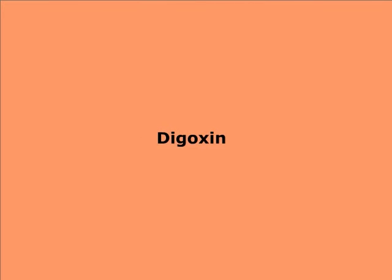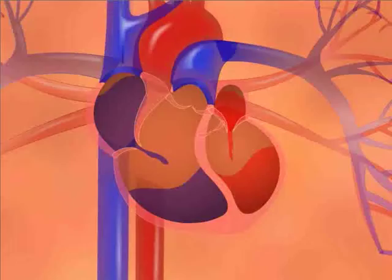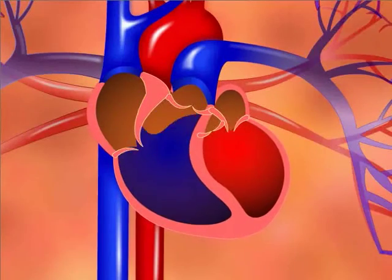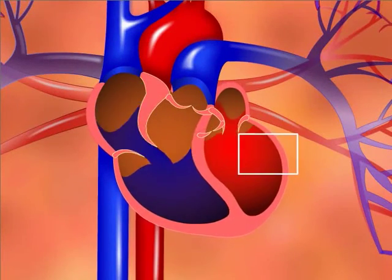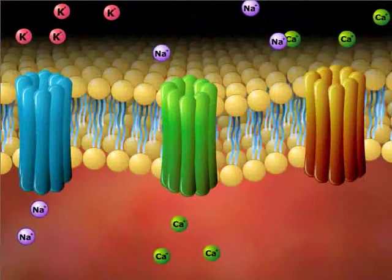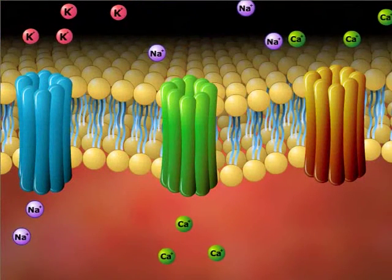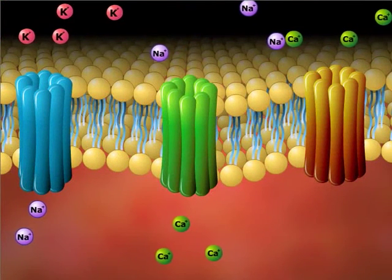Digoxin is used in the management of CHF due to its ionotropic effect. It can also be used in certain arrhythmias due to its negative chronotropic effect. Let's take a closer look and discuss the mechanism of action of digoxin. First, let's review the physiology.